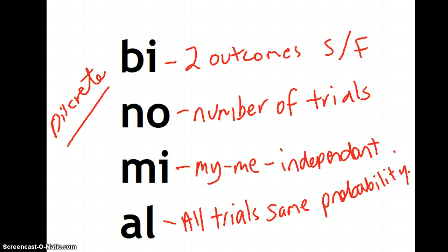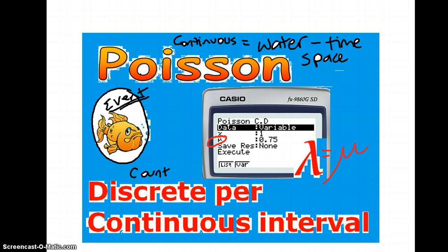For binomial, think of the four conditions. Bi means two outcomes — success or failure. N for the number of trials, which will be given. I'm independent, so the trials are independent and all trials have the same probability. Remember it's discrete — it's a counted number of trials, and success or failure of each trial.